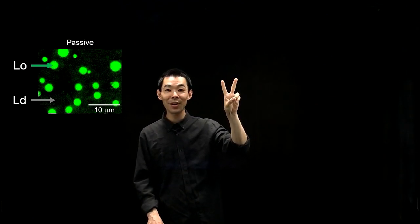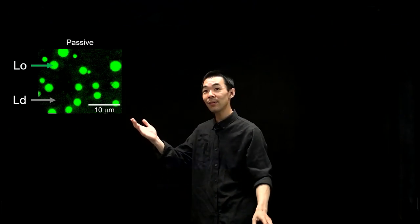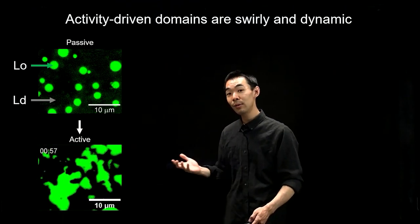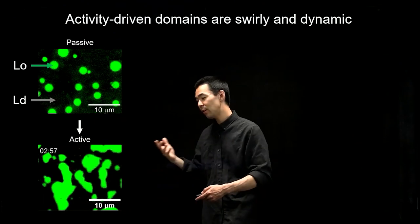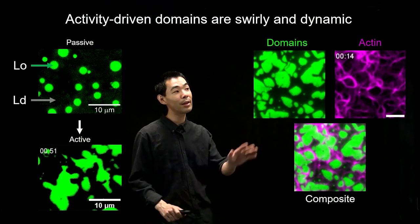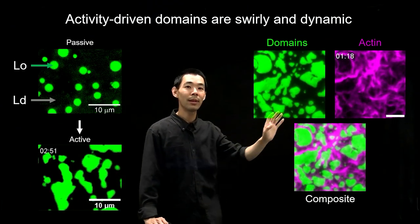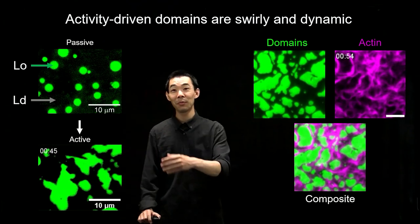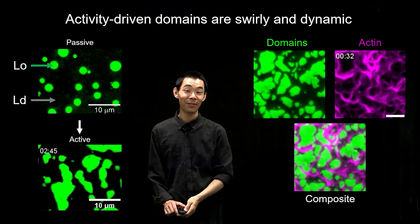In the passive case, domains grow circular and distribute in some way. But when you add active flows, the domains become very non-circular and elongated — they fuse, merge, and undergo highly complicated dynamics. Here's another iteration of the experiments showing the domain channel, the actin network, and the composite merged image of the two channels. You can really see that the passive case looks very different when you add active surface flows.